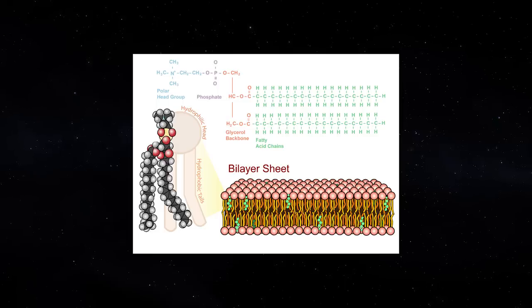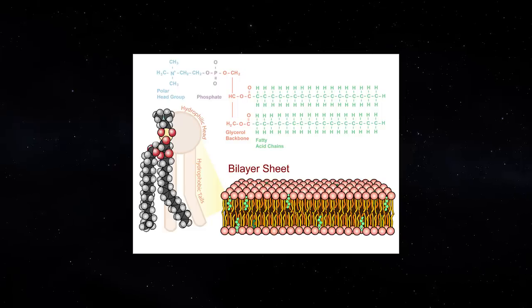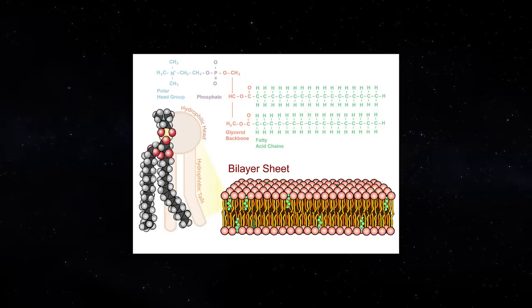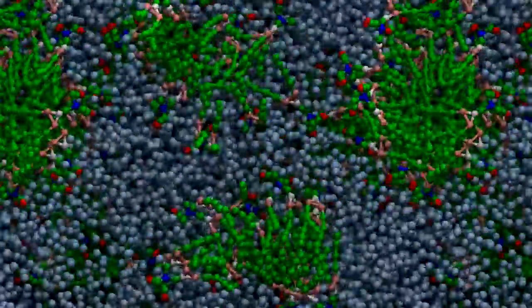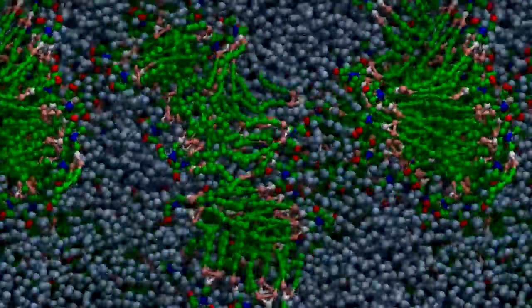On Earth, cells rely on a phospholipid bilayer, the protective structure that separates the inside of the cell from the outside world. These fatty molecules require water to exist.